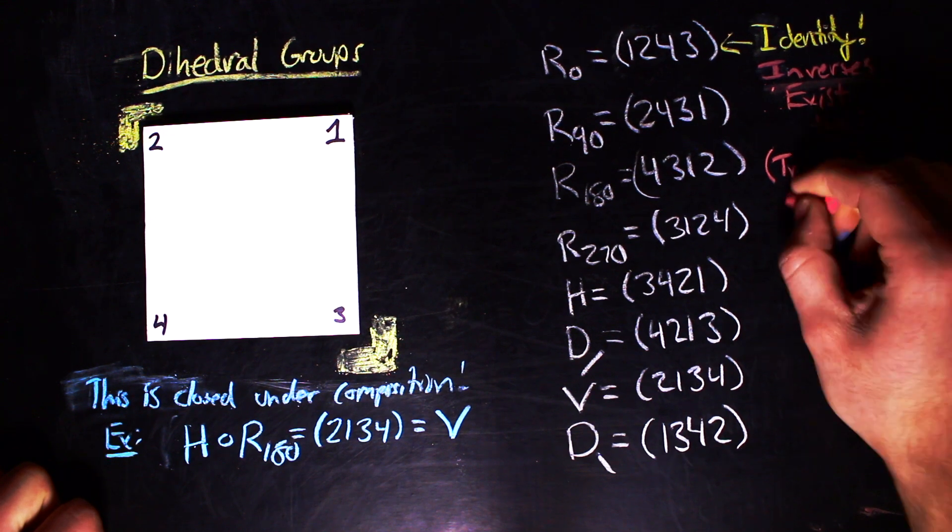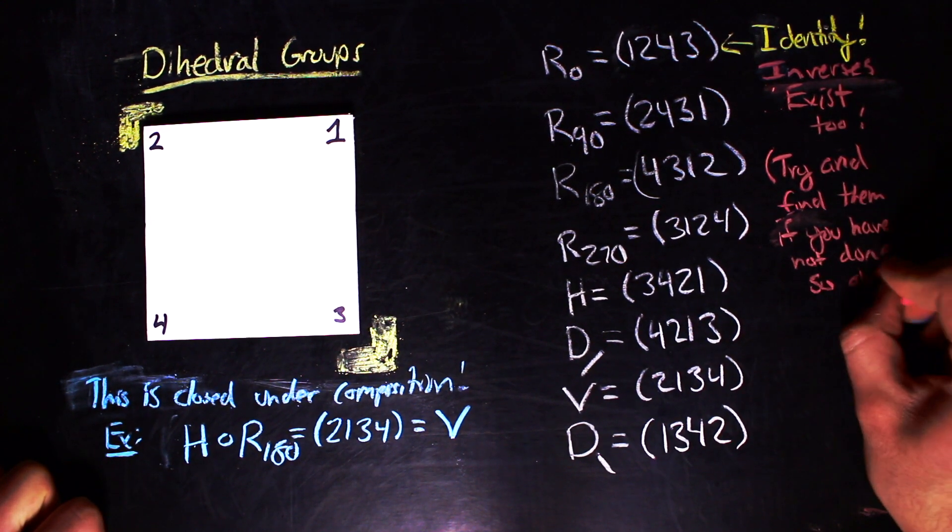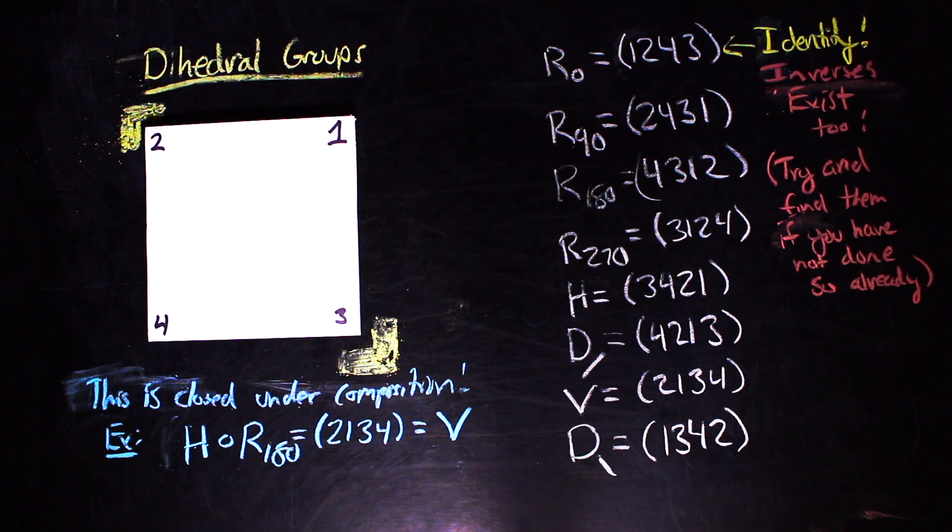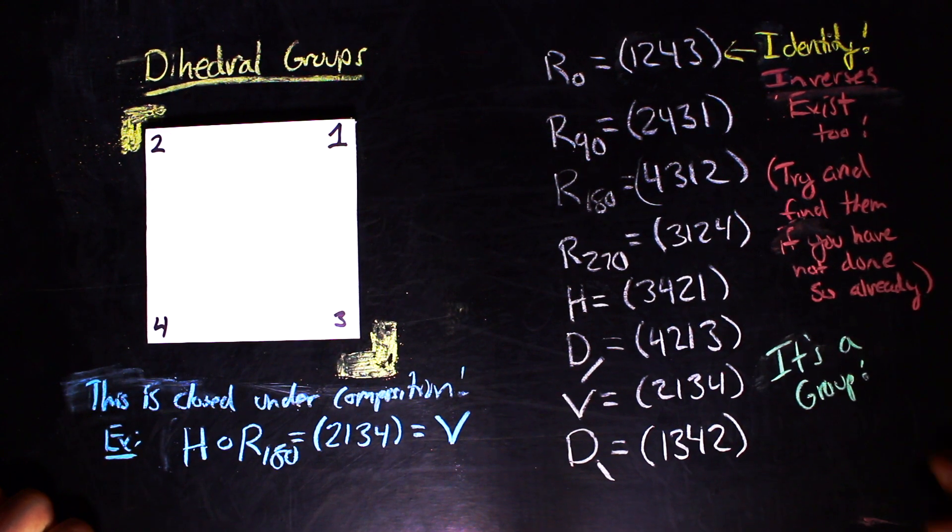The inverses also exist for each transformation. If you're able to find all eight things and reset the square back to 1, 2, 4, 3 each time when you found something new, then you've probably already found the inverses. If not, I encourage you to try and figure out what the inverses are. And then with all these three things, we have a group.